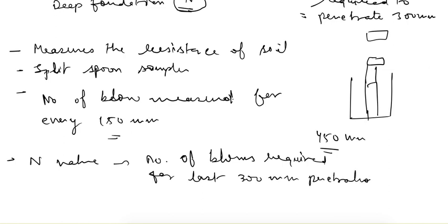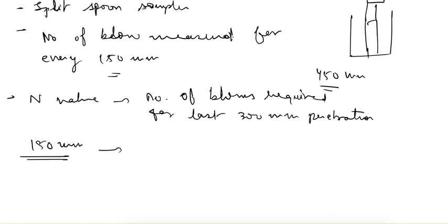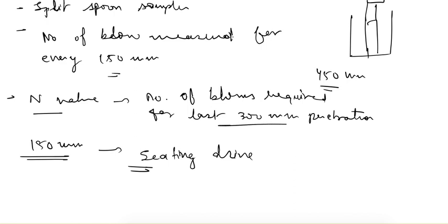We discard the initial 150 mm — the number of blows required for this initial depth is known as the seating drive. We do not use this value. The N value is given only for the last 300 mm of penetration.